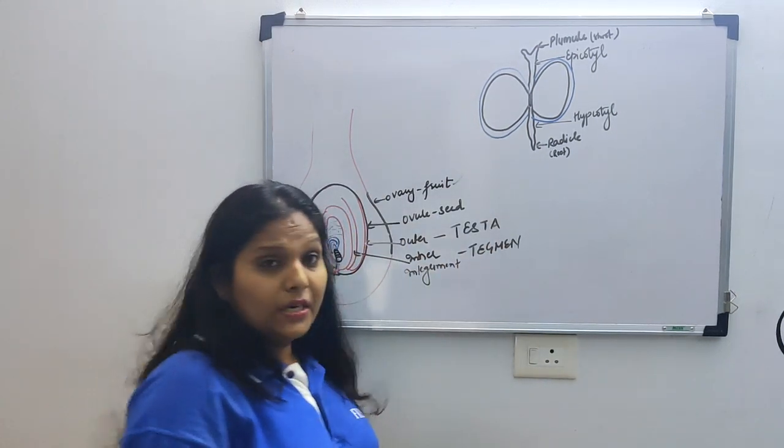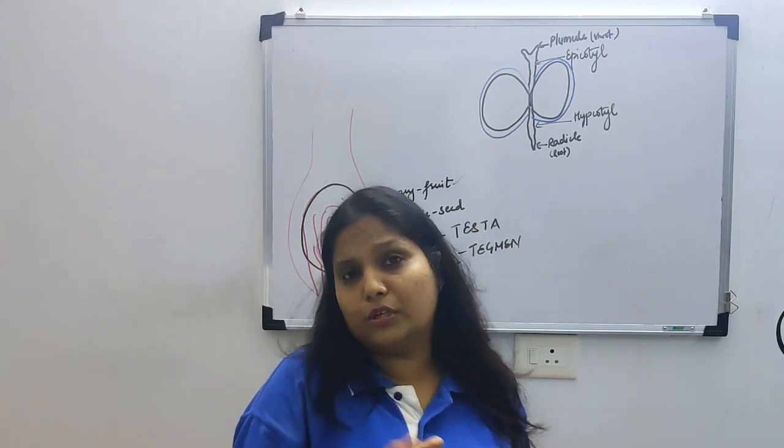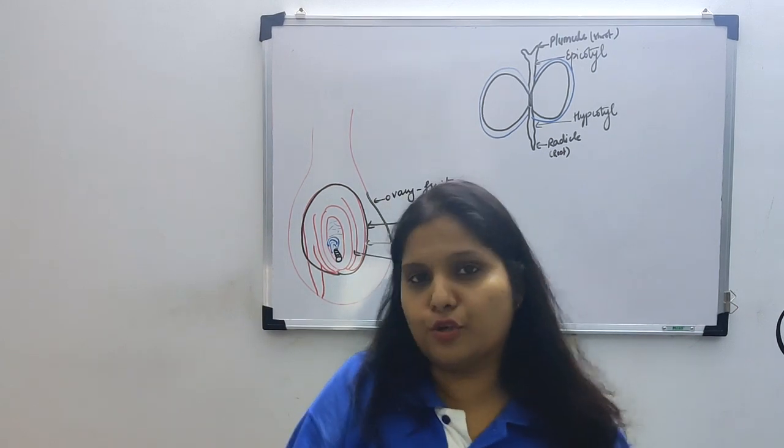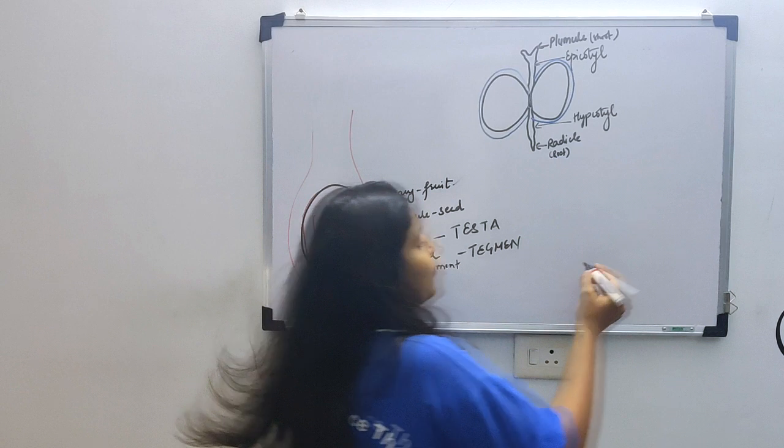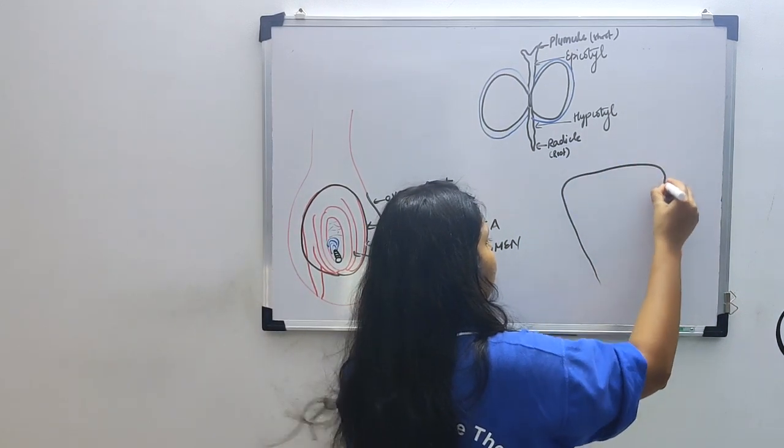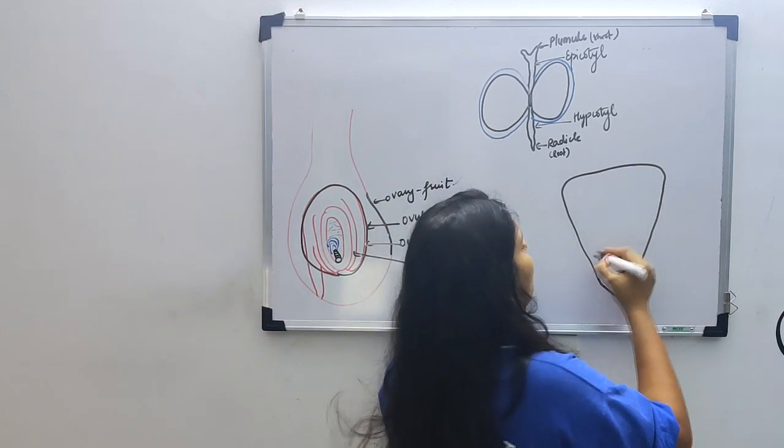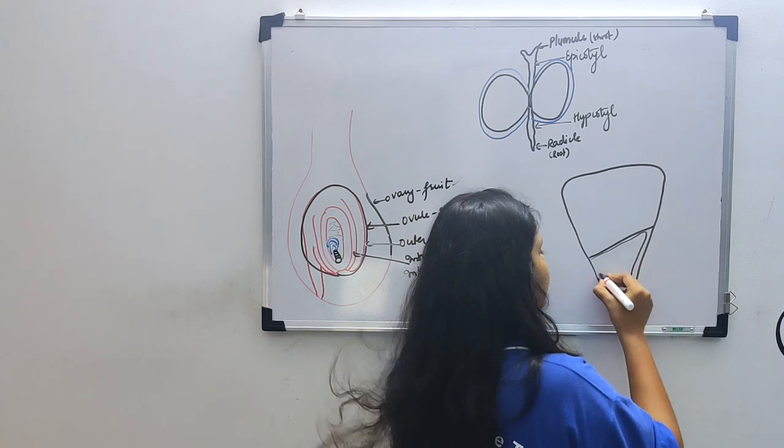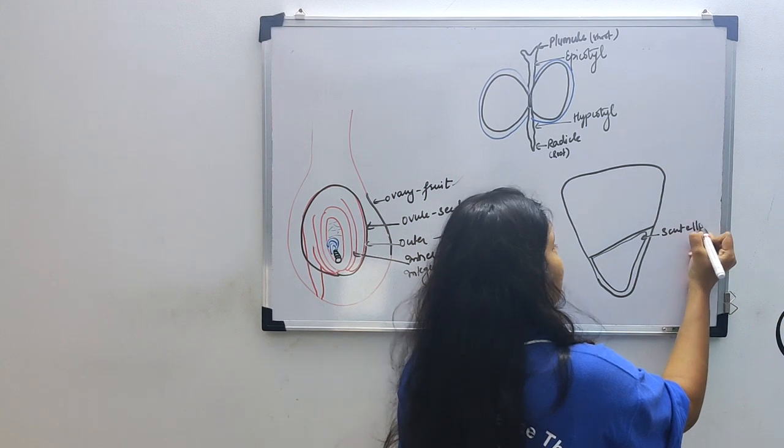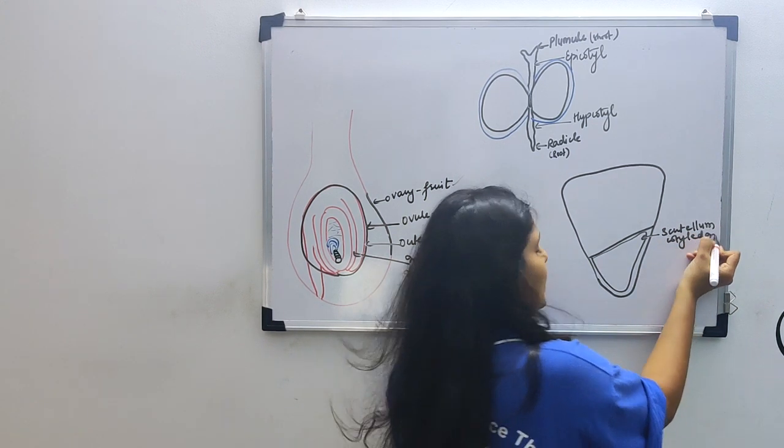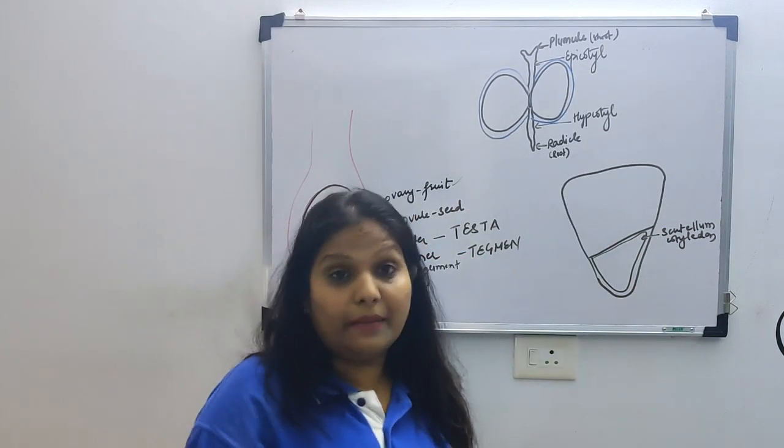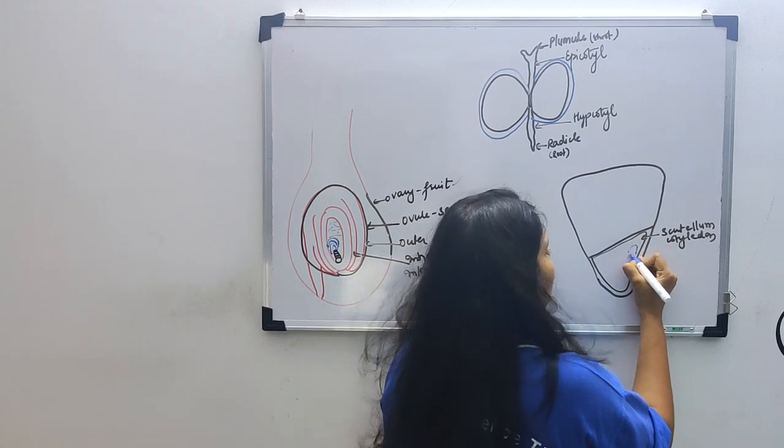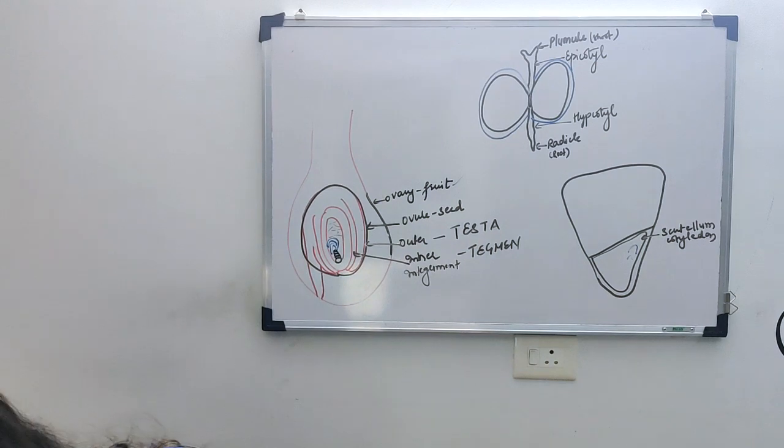Now, monocot seed. Because monocot seed has one cotyledon, when I say monocot seed, remember to talk about grasses. Here you will talk about rice, wheat, maize, etc. We are going to talk about the seed of maize because it is easy for us to identify. Your maize seed looks like this. The cotyledon in monocot is called scutellum. Scutellum is nothing but the cotyledon.